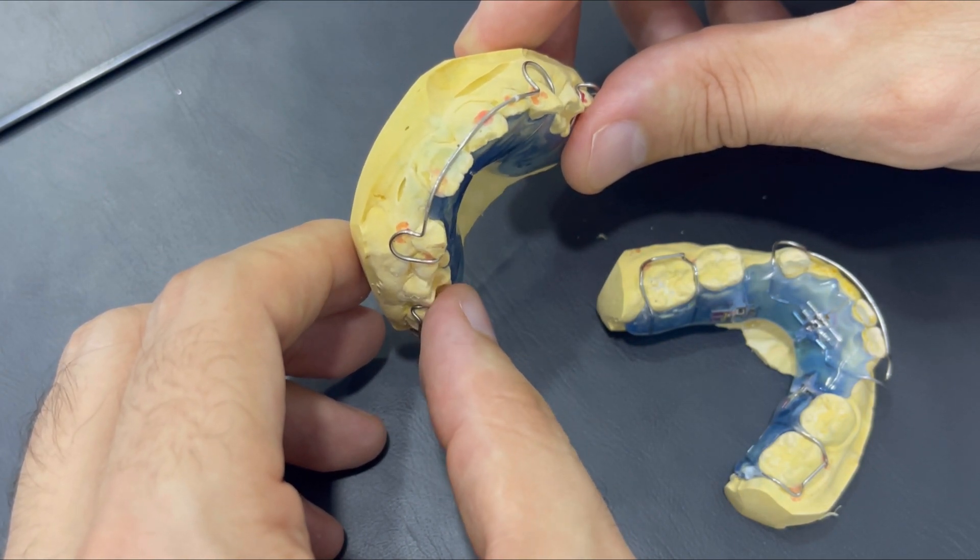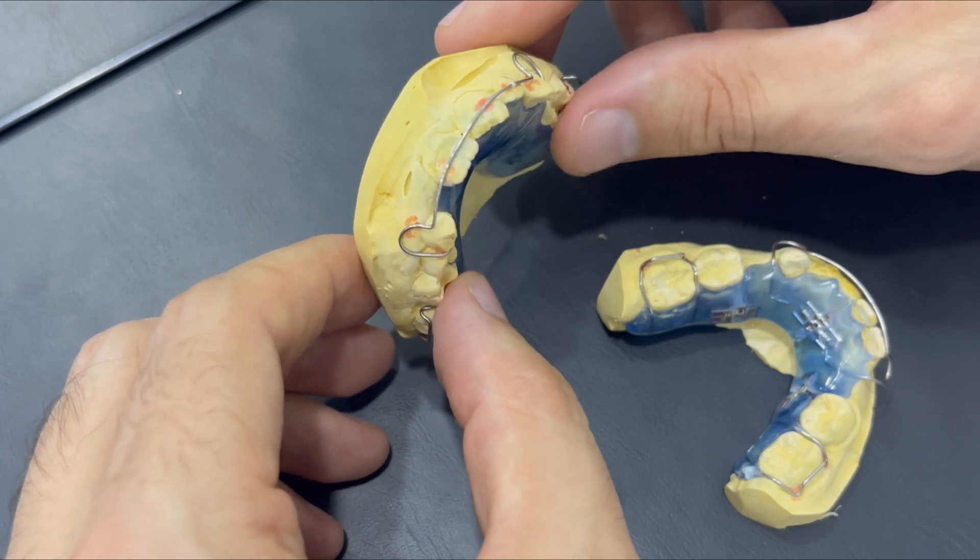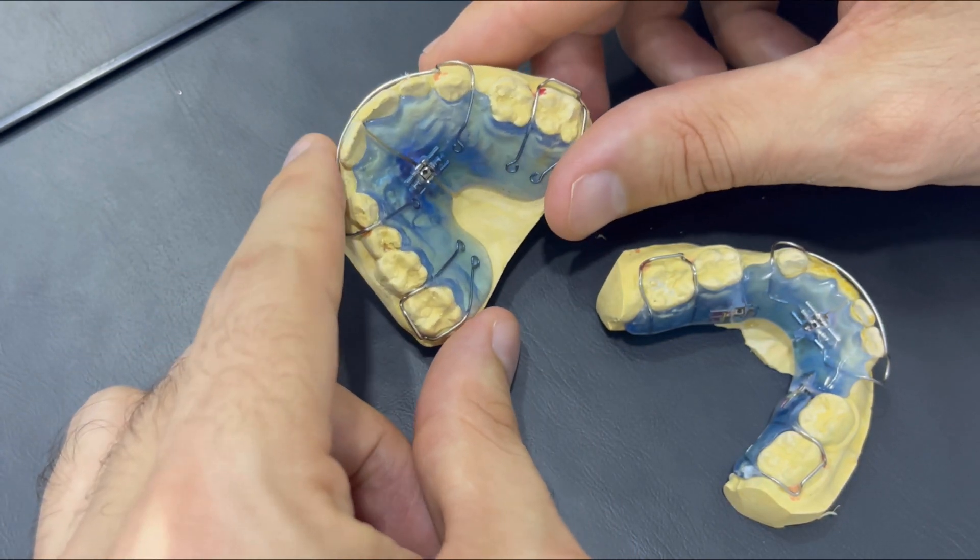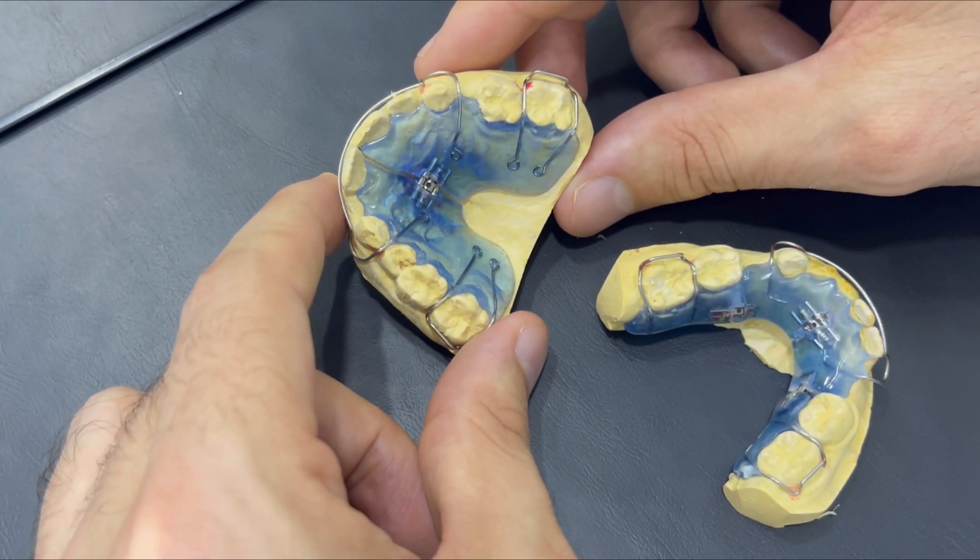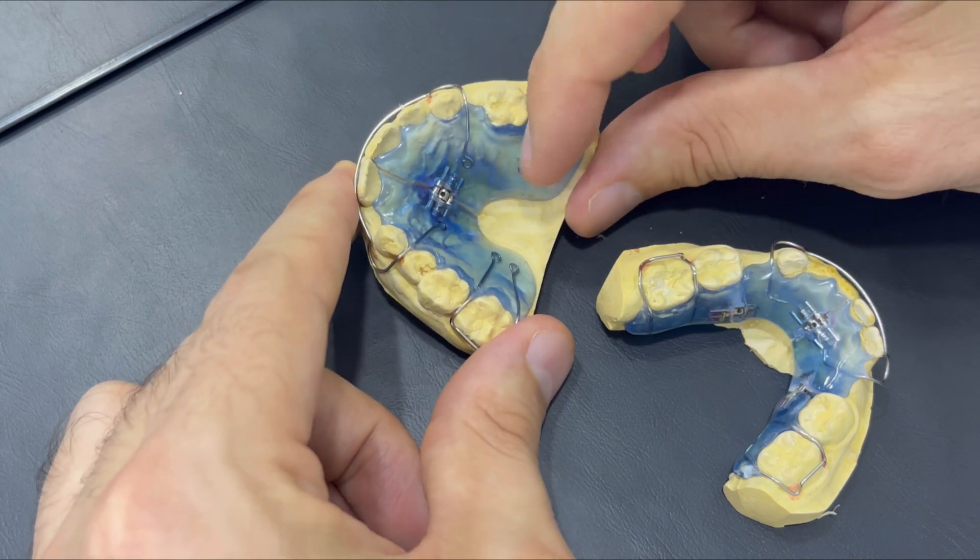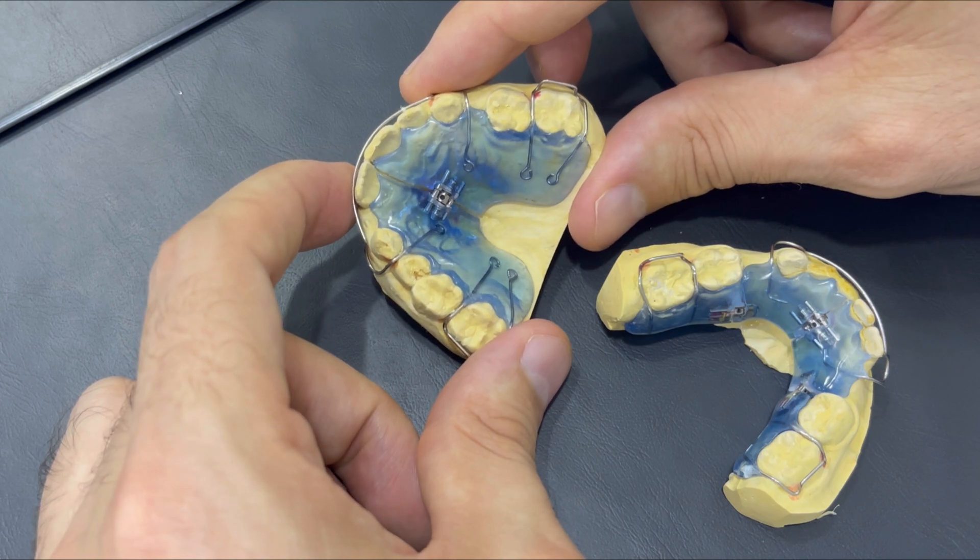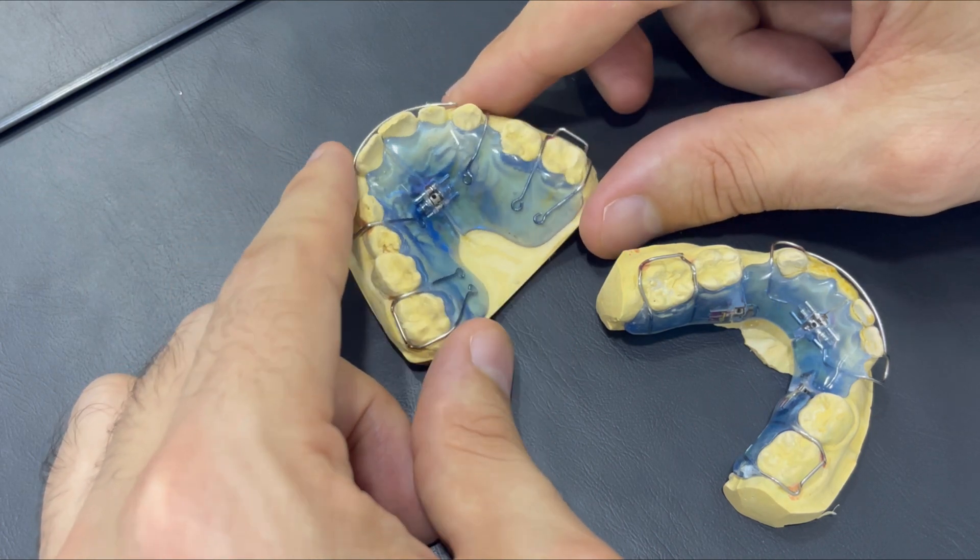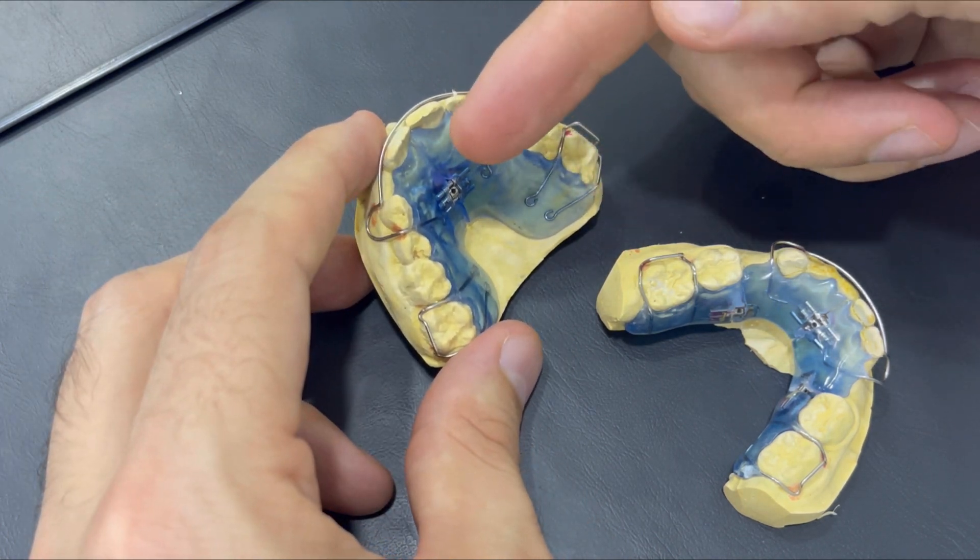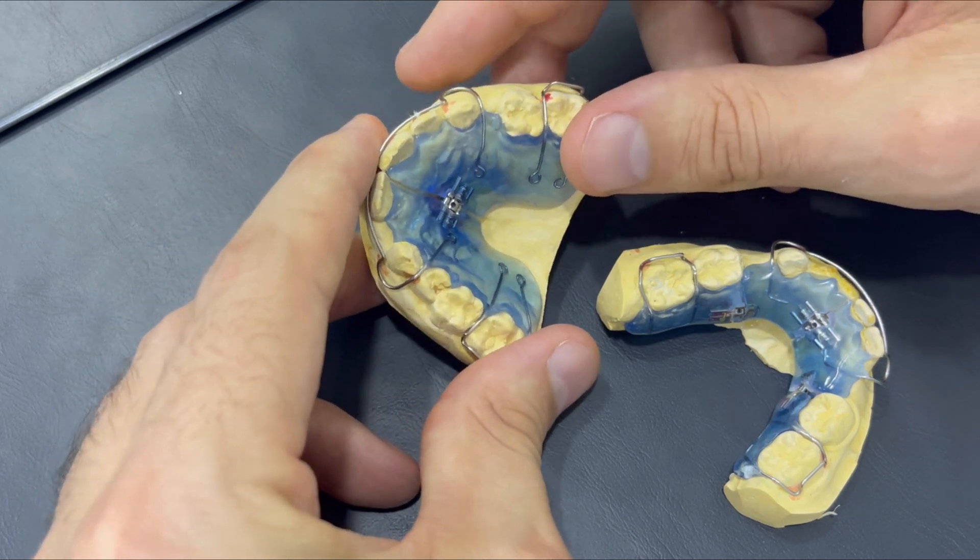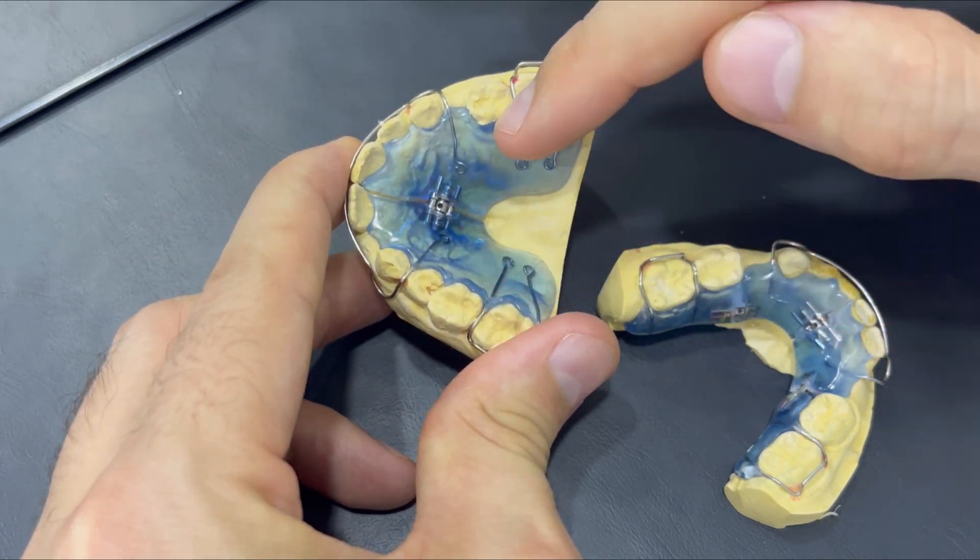Sometimes it's useful to incline the teeth outward if they are already inclined inward. The body of this device is designed to deliver horizontal forces to expand the teeth and using this screw to activate it.